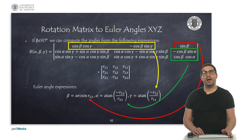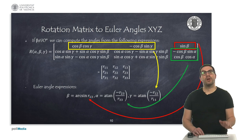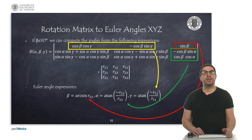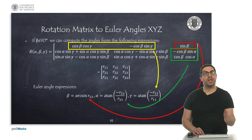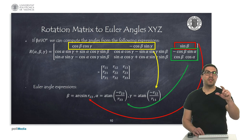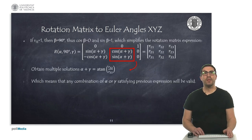And this is valid as long as the beta angle is not 90 degrees, because when beta is 90, the cosine of beta is 0, and then we cannot use this expression. As you can see, in this case for alpha and gamma, we obtain them from the corresponding elements as indicated in the expressions by doing an arctan of the division of two elements of the rotation matrix.